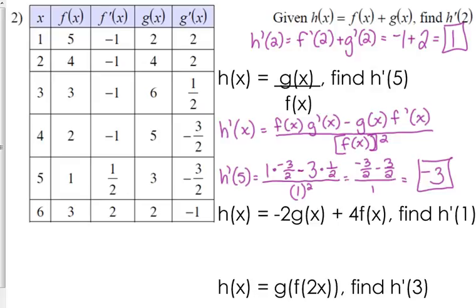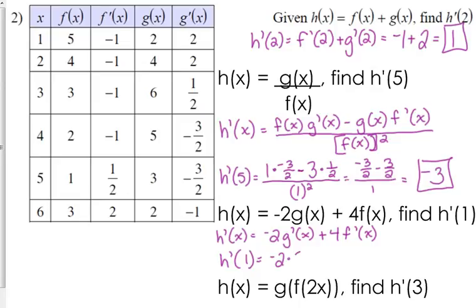The next one: h of x is equal to negative 2 g of x plus 4 f of x. That's a linear combination of functions, so we've got the scalar multiples that we bring down. So h prime of x is equal to negative 2 times g prime of x plus 4 times f prime of x. So h prime of 1 is equal to negative 2 times g prime of 1 which is 2, plus 4 times f prime of 1 which is negative 1. So we've got negative 4 plus negative 4, which is negative 8.